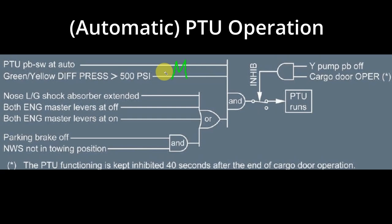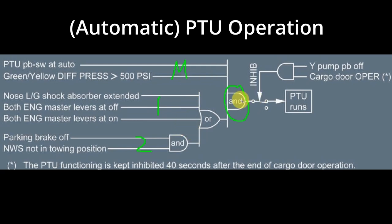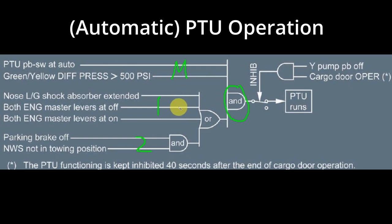Apart from the master conditions, we need either one of two sets of conditions — Set 1 or Set 2. Set 1 is an OR gate, so any one condition from Set 1 is good enough for it to be satisfied. If Set 2 is being used to get the PTU to run, then being an AND gate, both of those conditions must be met.